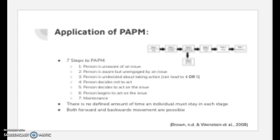From stage 3, a person can move to stage 4, not acting, or stage 5, where they will choose to act. Should one choose not to act and enter stage 4, they will finish their path within the model. The decision to enter stage 4 or 5 is primarily driven by one's belief regarding the severity and risk behind an issue, susceptibility, precaution effectiveness, and perceived social norms.